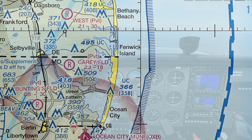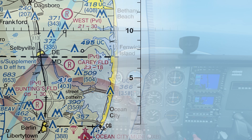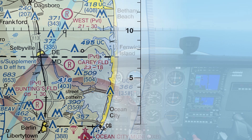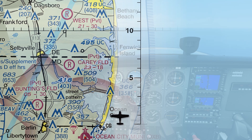We want to determine how far we travel in a certain amount of time. For distance, we can use the lines of longitude — the vertical lines on the chart. It's very important that you don't use the horizontal latitude lines, because these lines shrink as you get closer to the pole, so you don't get a constant distance between the hash marks.